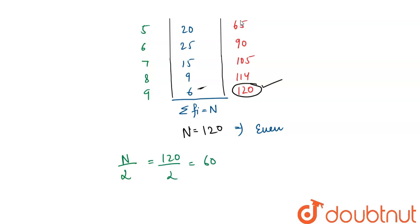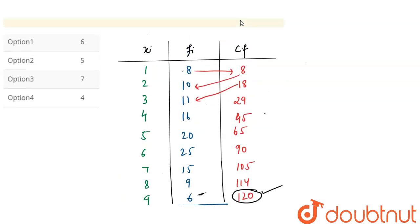Now what do we have to do? From the cumulative frequency we need to find such number which is closer to 60. So if we see in our cumulative frequency, 65 is closer to 60.